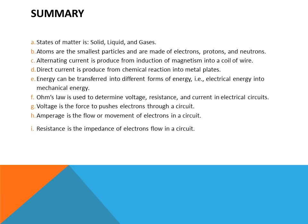To summarize this chapter on basic electricity: matter exists in three states — solid, liquid, and gas. Atoms are the smallest particles and are made of electrons, protons, and neutrons. Alternating current is produced from induction of magnetism into a coil of wire. Direct current is produced from a chemical reaction with metal plates inside a battery. Electrical energy can be transferred into different forms, such as mechanical energy. Ohm's Law is used to determine voltage, resistance, and current in electrical circuits. Voltage is the force that pushes electrons through a circuit, amperage is the flow or movement of electrons, and resistance is the impedance of electrons in a circuit.